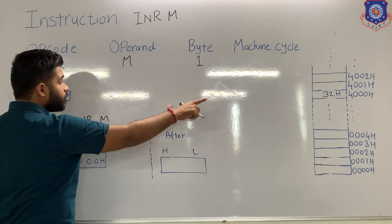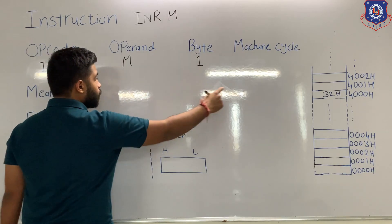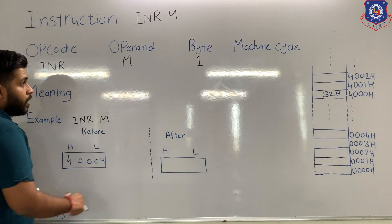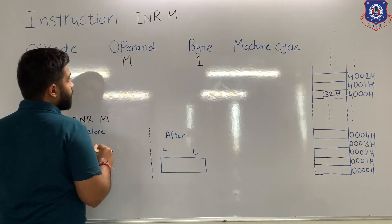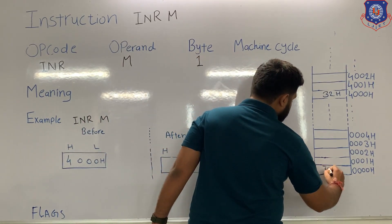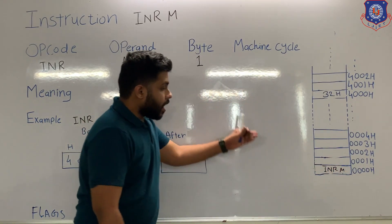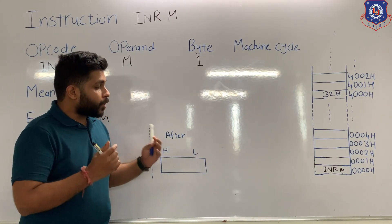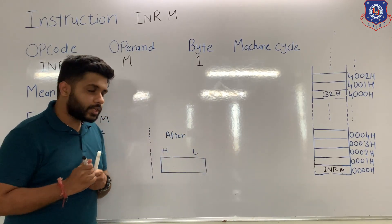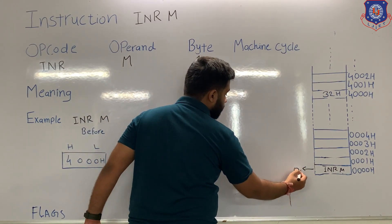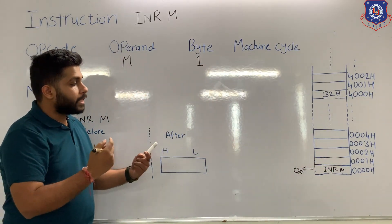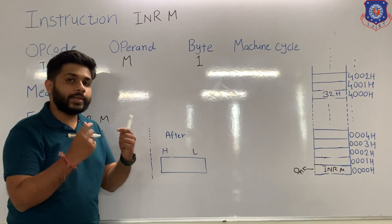When this instruction is executed, 32H will be incremented and after increment it will be stored in the same memory location. This instruction is of one byte, so when we store this instruction in memory, it will occupy only one memory location. After the instruction is stored in memory, the processor will start its work — that is to fetch, decode, and execute. To fetch the instruction, the processor will perform the first machine cycle, that is opcode fetch. When opcode fetch is performed, the whole instruction will be transferred to the microprocessor. Then the processor will decode and execute that instruction.